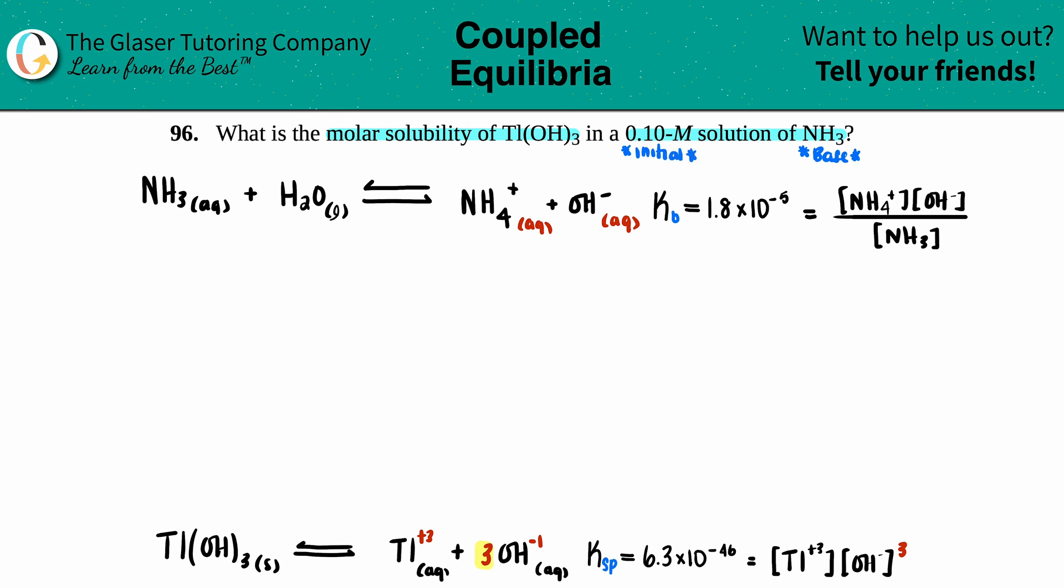So if you want, we could just quickly do the ICE table. So let's break it down. Remember, since water is a liquid it does not matter for your ICE table, so just get rid of that. They do tell you that you started off with 0.10 molarity of NH₃, nothing for NH₄ or OH⁻, so that's zero and zero.